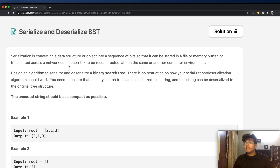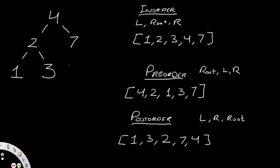Before we move any further, I want to go through what exactly a binary search tree is. It's a tree-based data structure. In a binary search tree, let's say we go to a certain node — let's go to the node with the value four. Everything to the left of that node has to be less than the current node. So we're at four, and we have one, two, three, which are all less than four. And then seven is to the right, so everything to the right is greater than the node we're on.